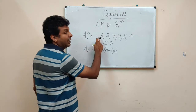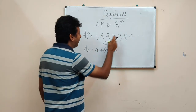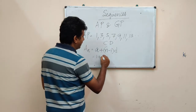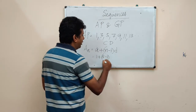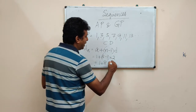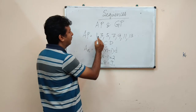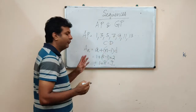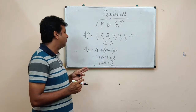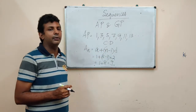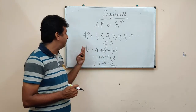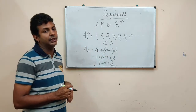So in this particular sequence, if you find out the fifth number: the fifth number will be first number plus (5 minus 1) multiplied by 2. That is 1 plus 4 into 2, which is equal to 9. So the fifth number is 9. Here the nth number is A plus (n minus 1) into D, where A is the first number, n is the nth number you are trying to find out, and D is the common difference.